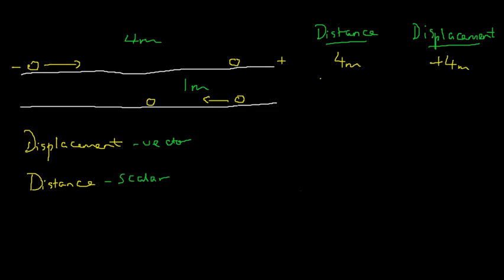Now let's look at the second part of the motion, where the ball moves back. The distance moved is 1 meter. This time the displacement is to the left, so we need a minus sign — minus 1 meter is the displacement.